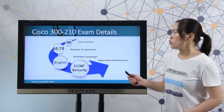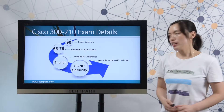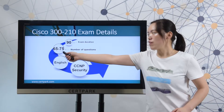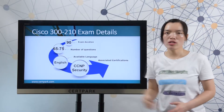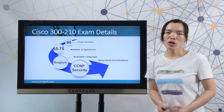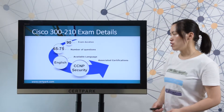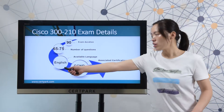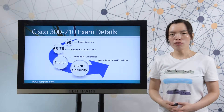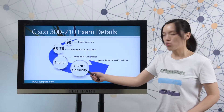In the real Cisco 300-210 exam, there are 65 to 75 questions. You have 90 minutes to complete the test. The test language is English, and the associated certification is CCNP Security.